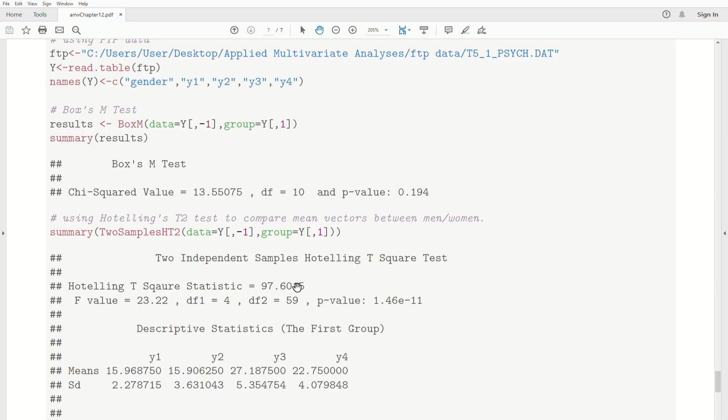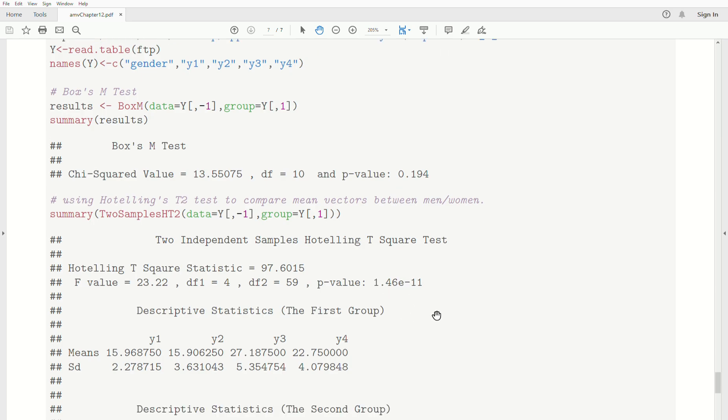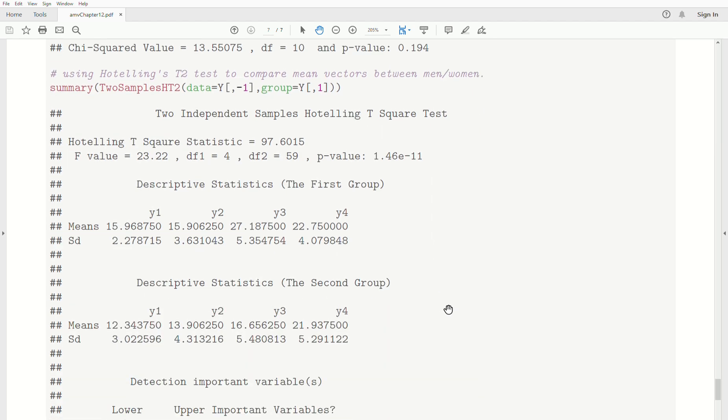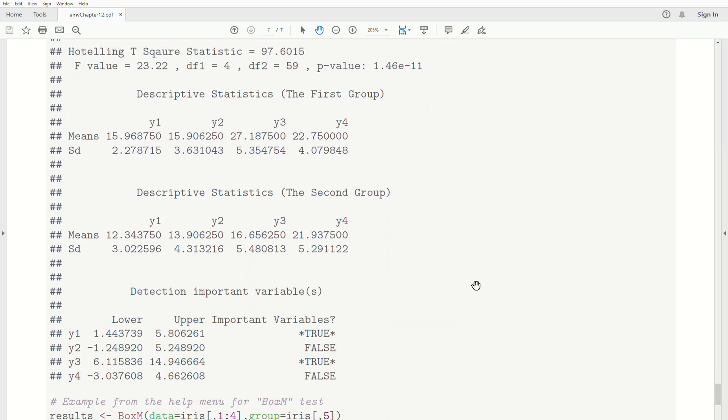The test statistic 97 converts it to an F. The p-value is really small, so there's evidence to say that those group mean vectors are different. And that's it.